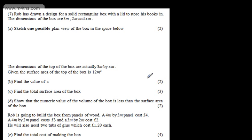This is question number 7 and it's a non-calculator question. We're told Rob has drawn a design for a solid rectangular box with a lid to store his books in. The dimensions of the box are 3 meters, 2 meters and x meters. In part A, for two marks, we're asked to sketch one possible plan view of the box in the space below. Remember, a plan view is a bird's eye view. We're looking down from the top.